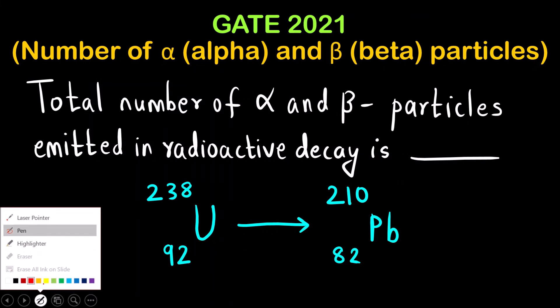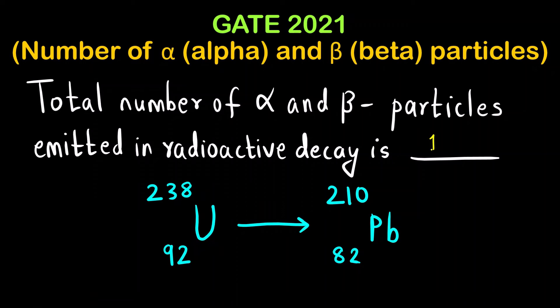The correct answer is 11. If you see the range of this question, it is given 11 to 11. If you insert any other number like 12 or 10, you will not get the credit. You have to write only 11.